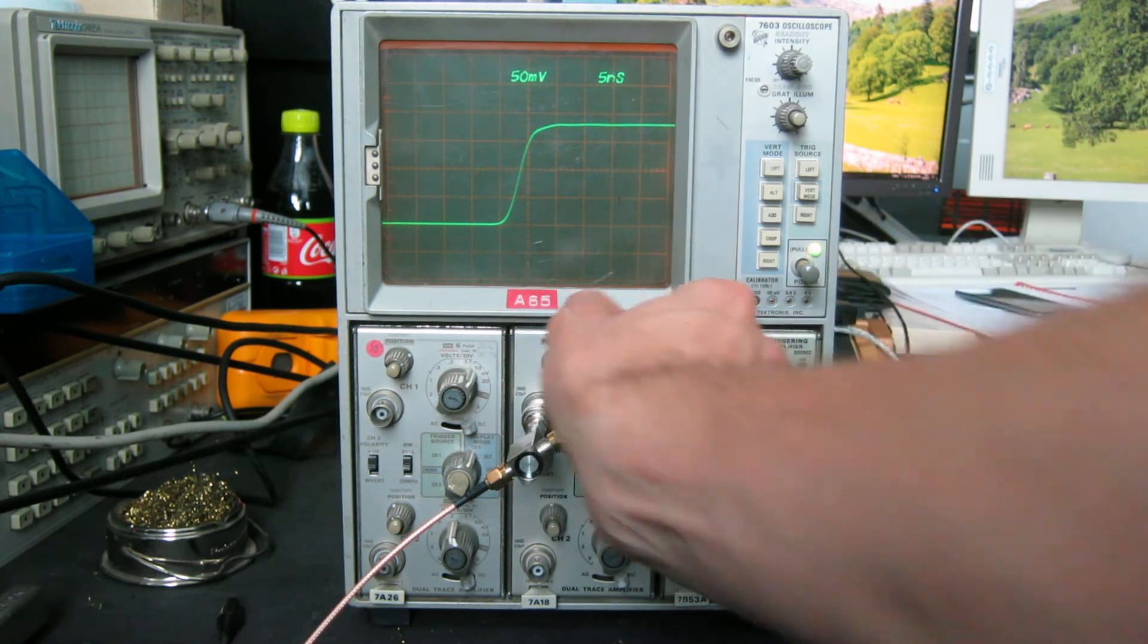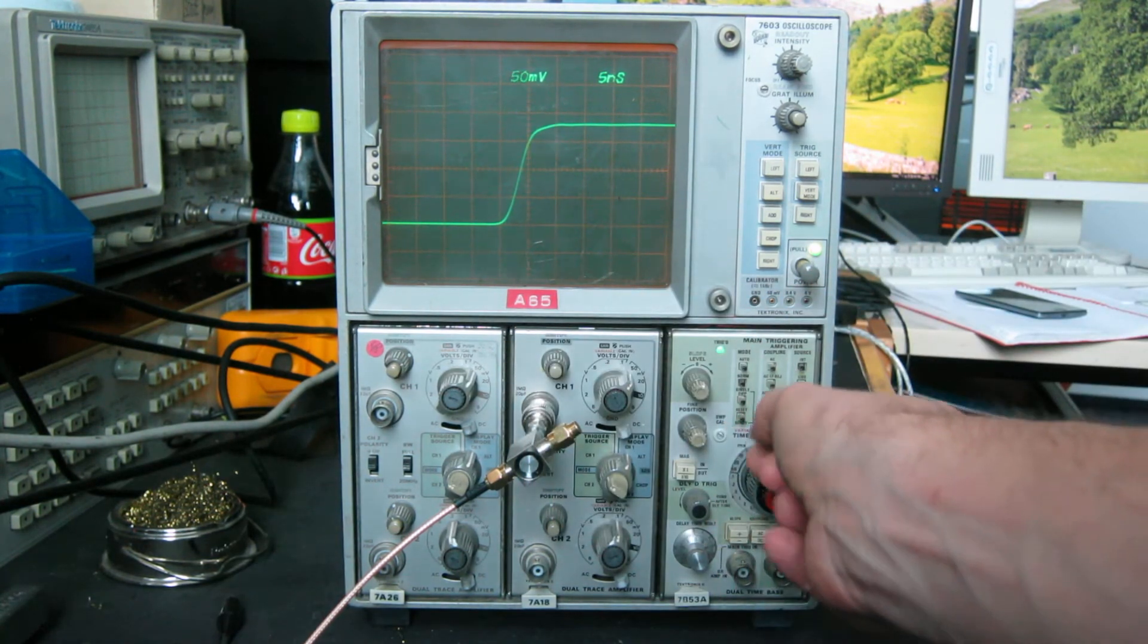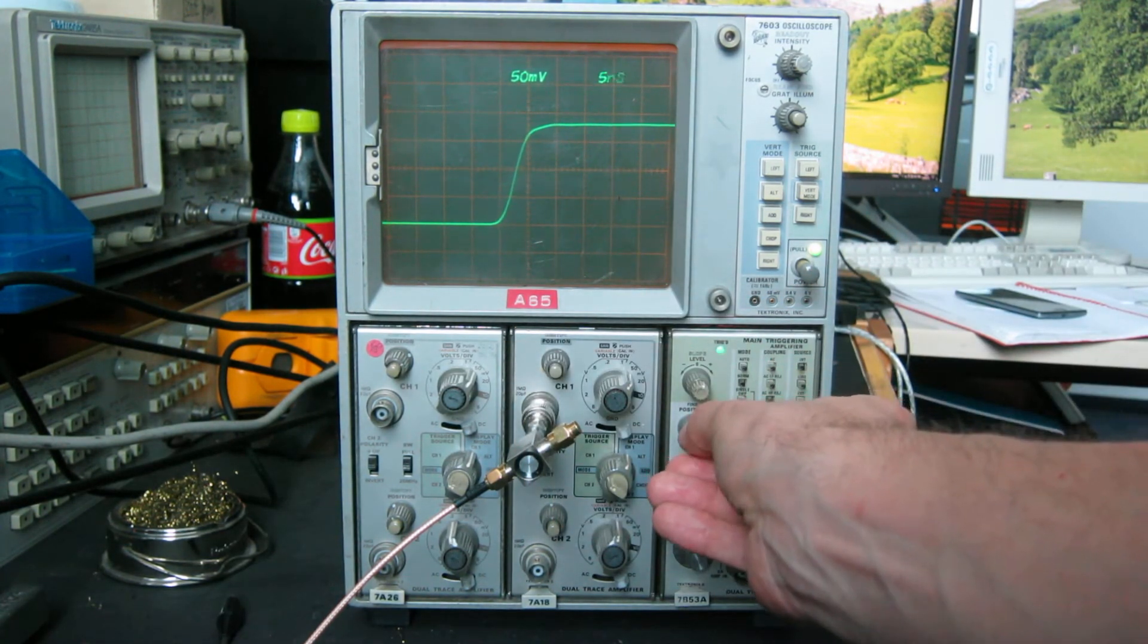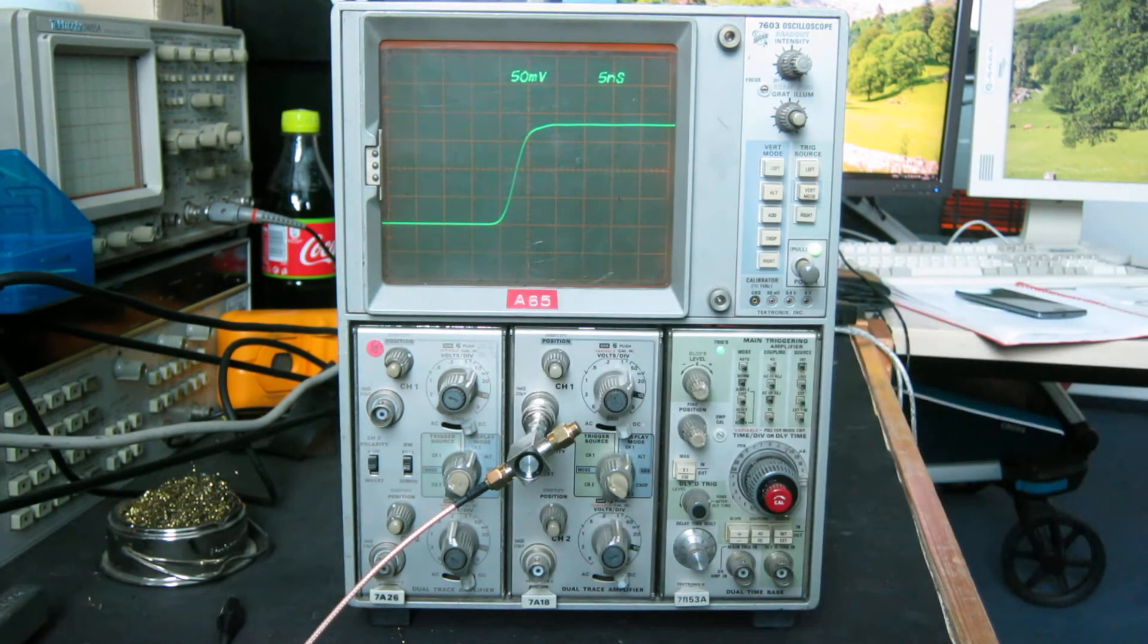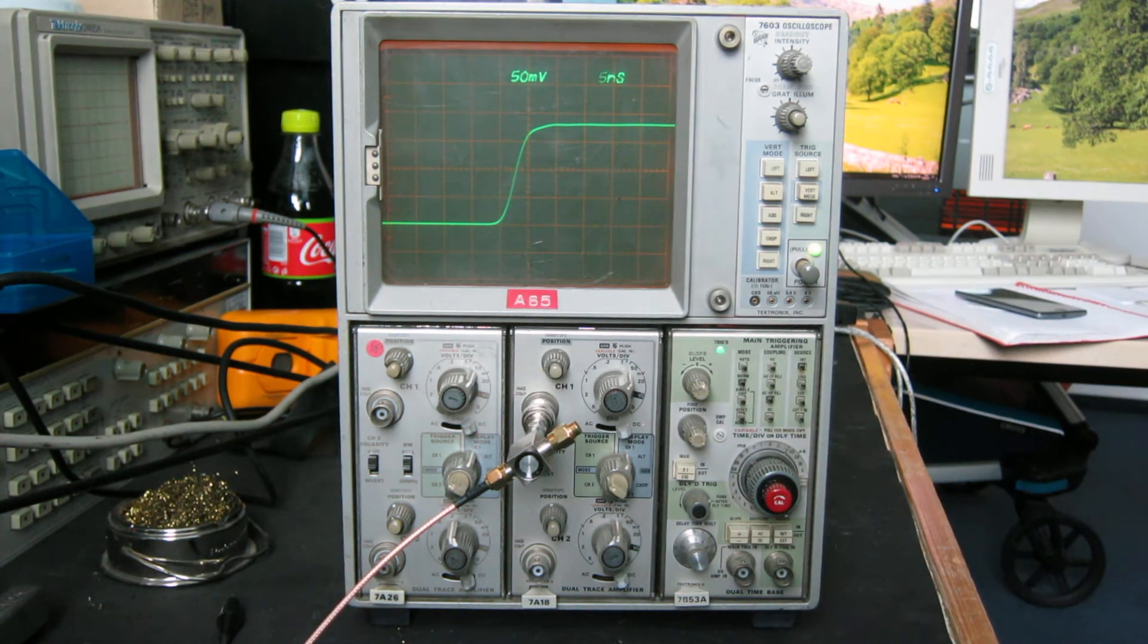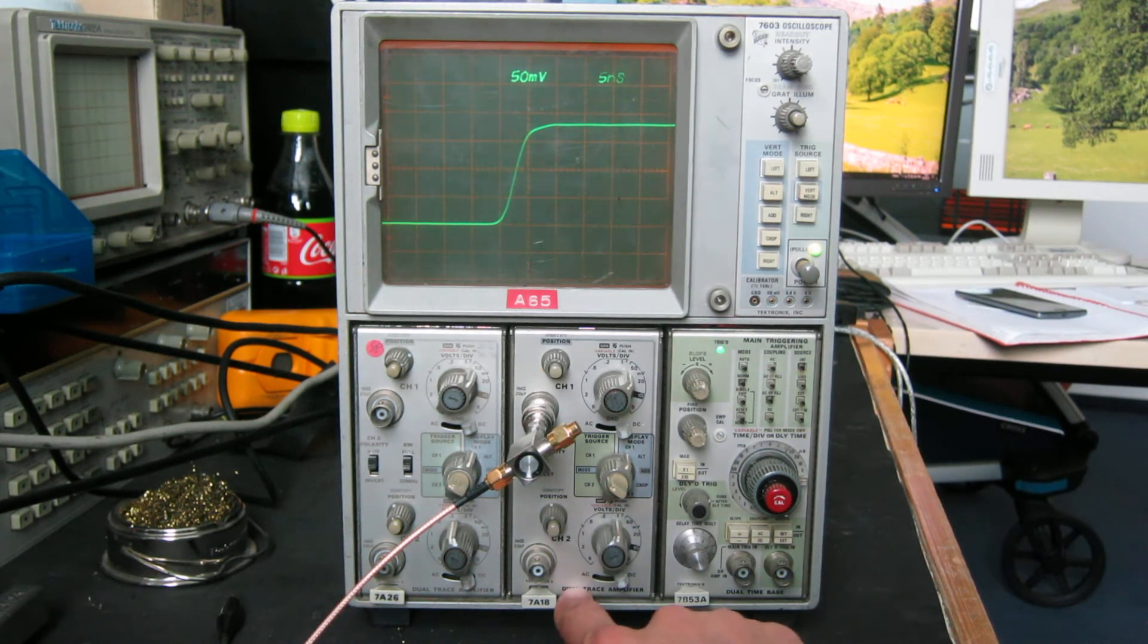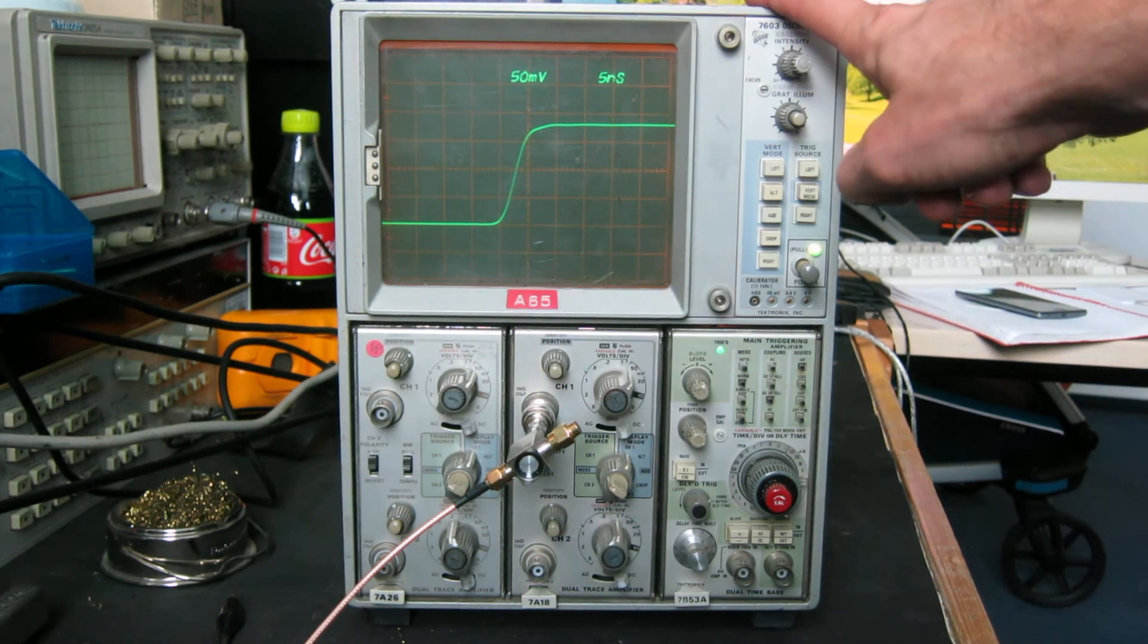That one actually looks a bit tidier. I think the inputs match better. There you can see the rise time is about 5 nanoseconds. It's a little bit slower, which gives it a bandwidth of 75 megahertz, which is what you'd expect for a 7A18 in the 7603 mainframe.